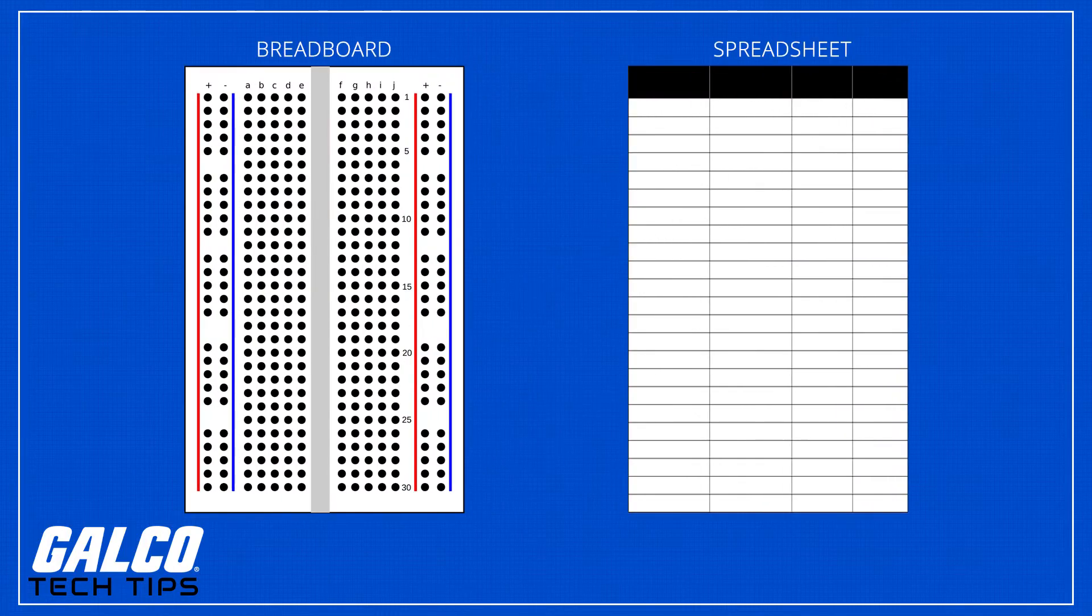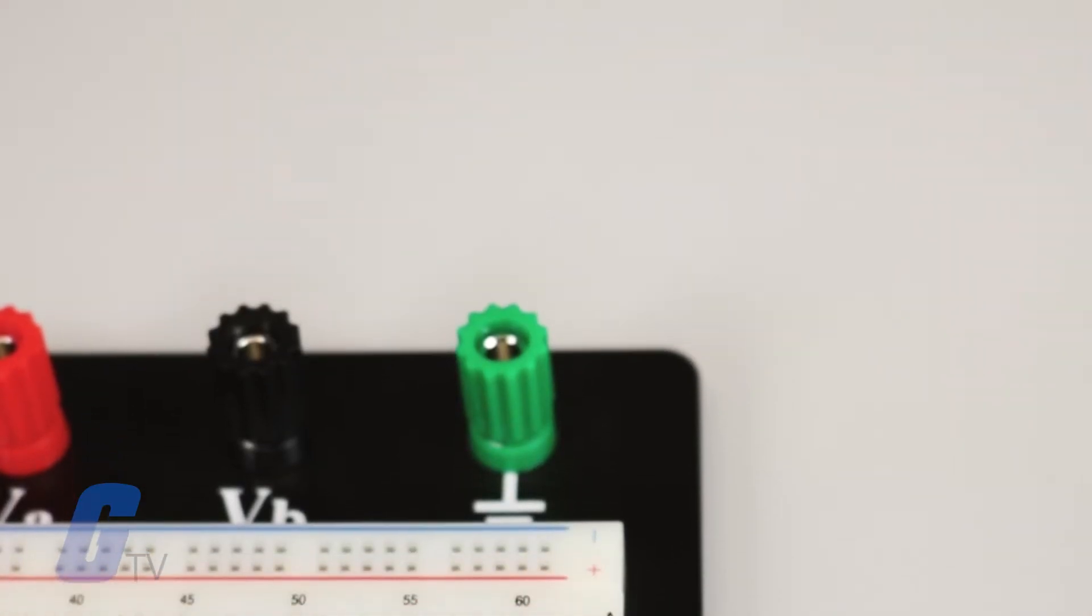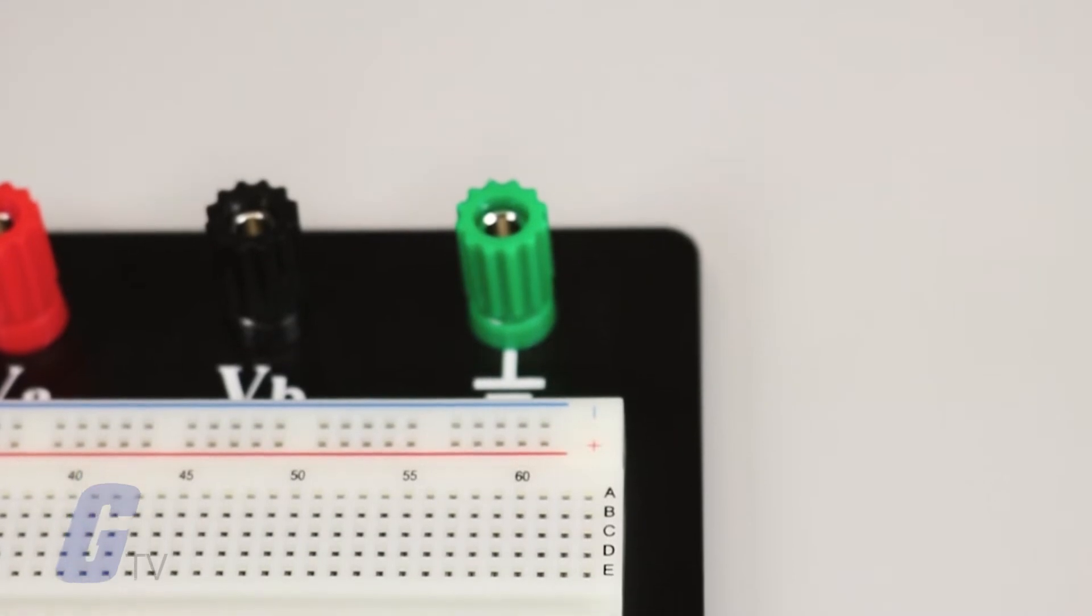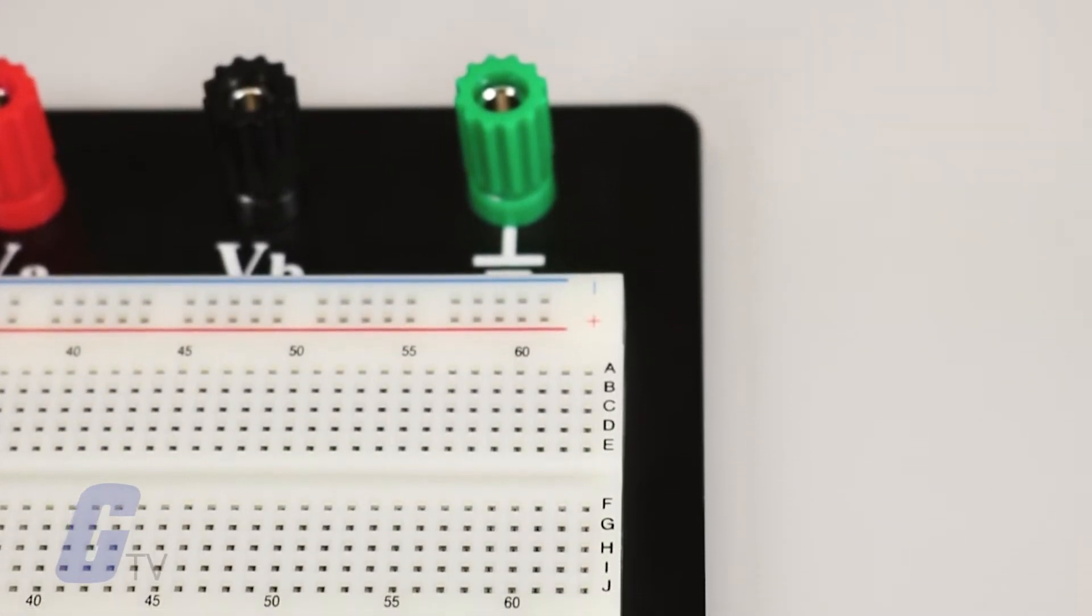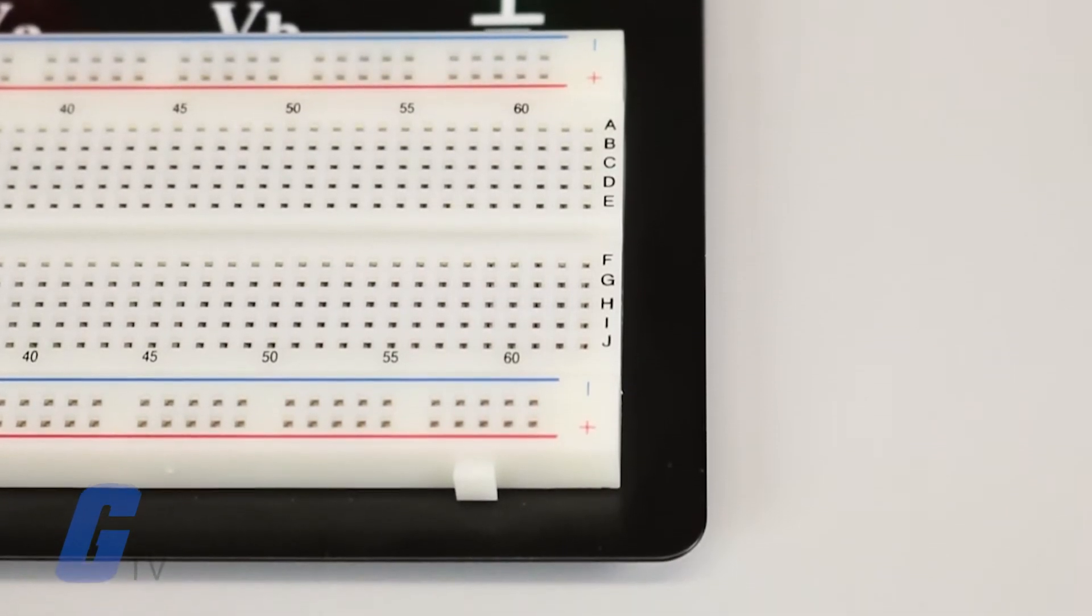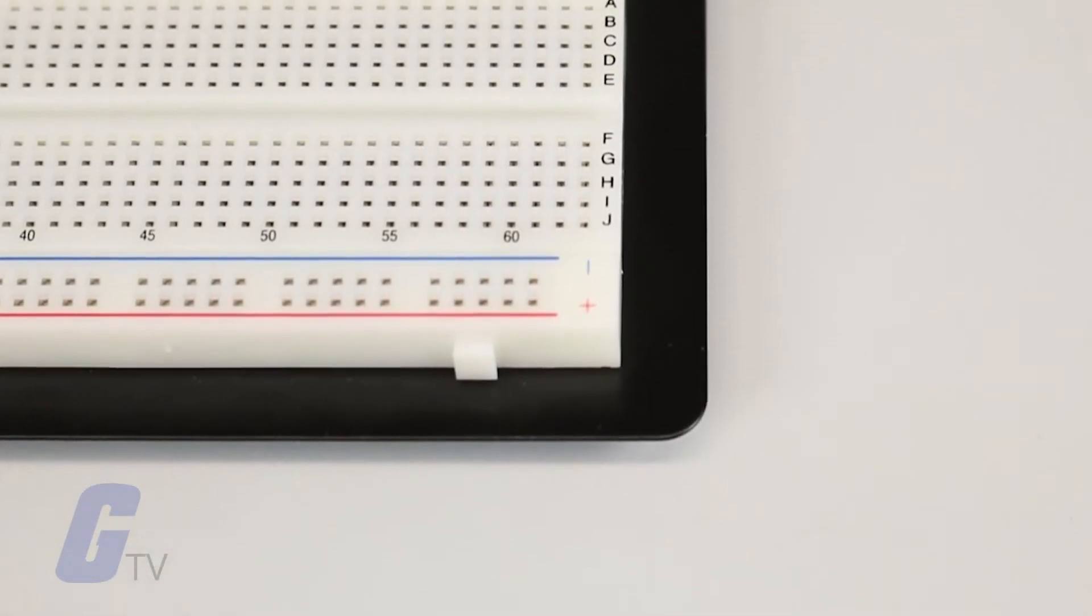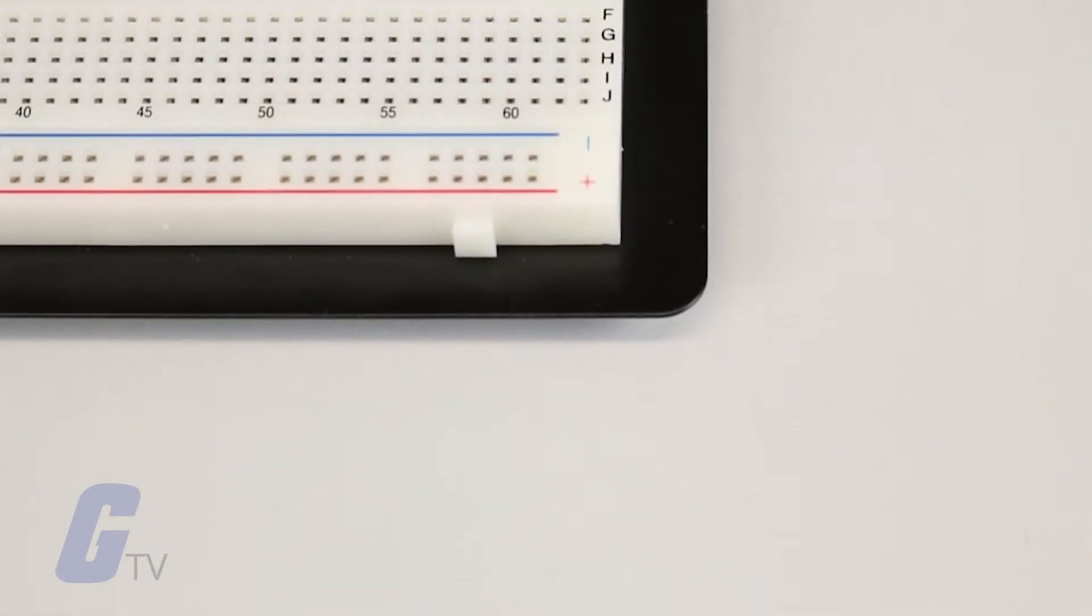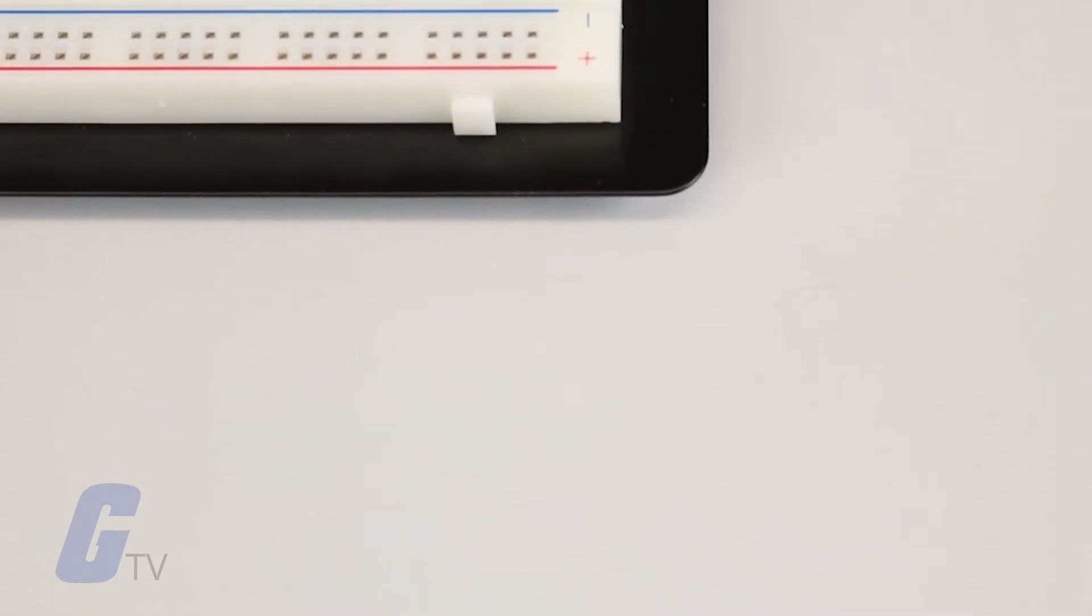You can think of this concept as being similar to a spreadsheet. On either side of most breadboards are strips of holes surrounded by plus and minus signs. These strips are known as buses or rails and are used to supply electrical power to your circuit when it's connected to a battery pack or external power supply.